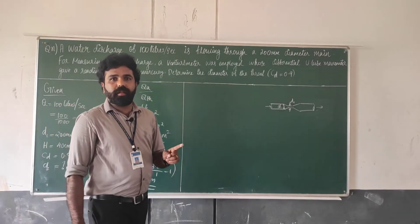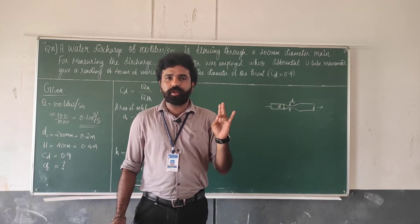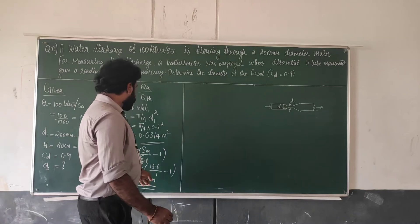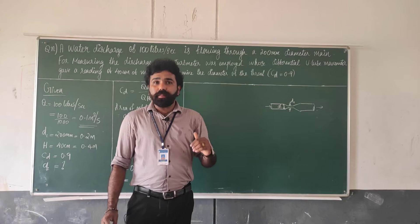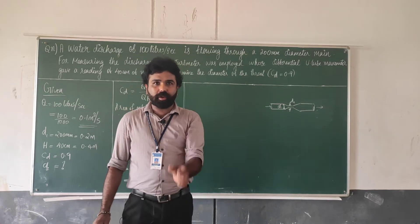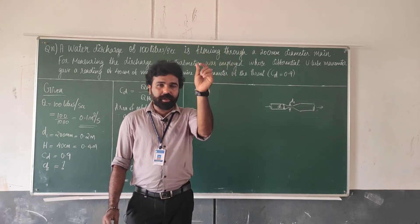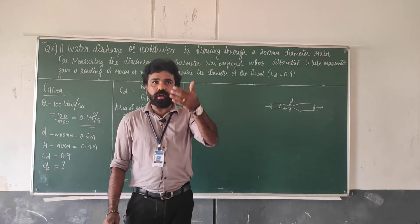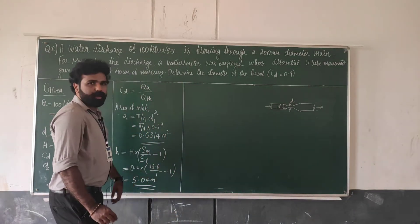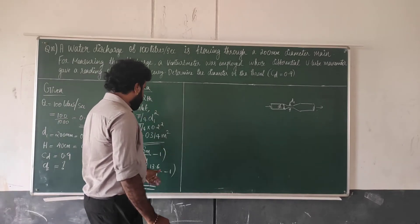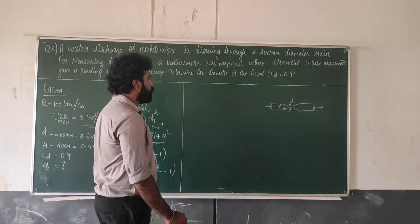So if we use a Venturimeter with water flowing through it and mercury in the U-tube differential manometer, we multiply the manometer reading directly by 12.6. When you do a lab experiment, you can write in the tabular column directly multiplied by 12.6.